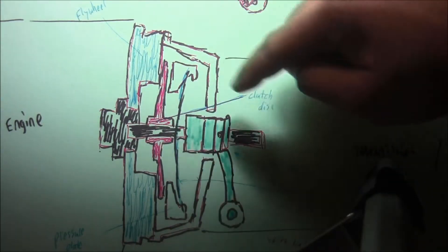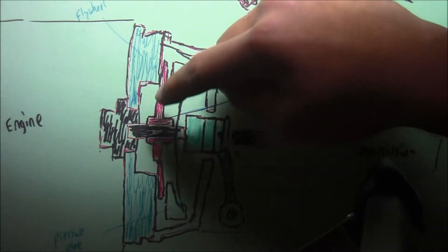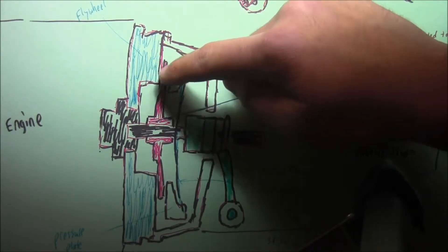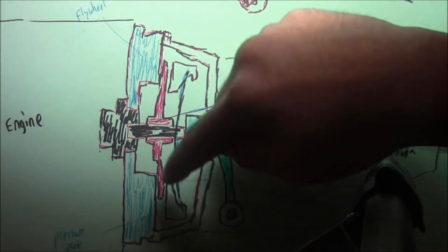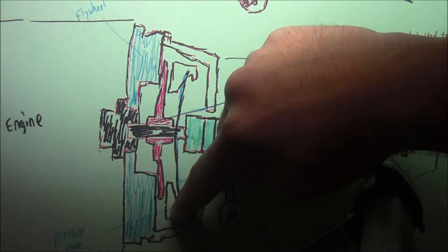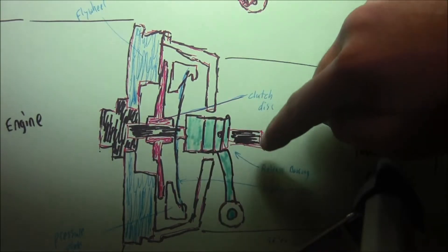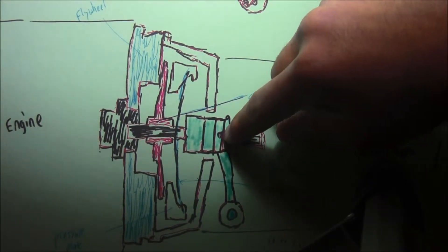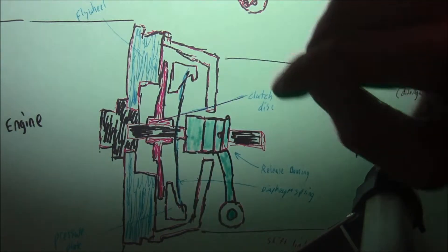You have a clutch disc which is sandwiched in between the flywheel and the pressure plate, and you have a release bearing which when you press in on the clutch pushes inward, lifting the pressure plate.